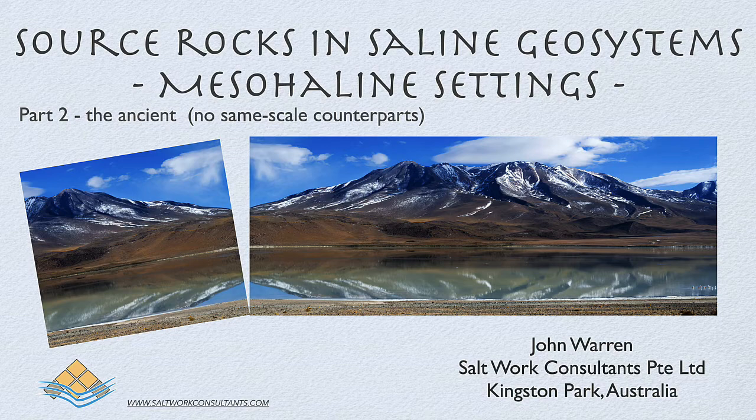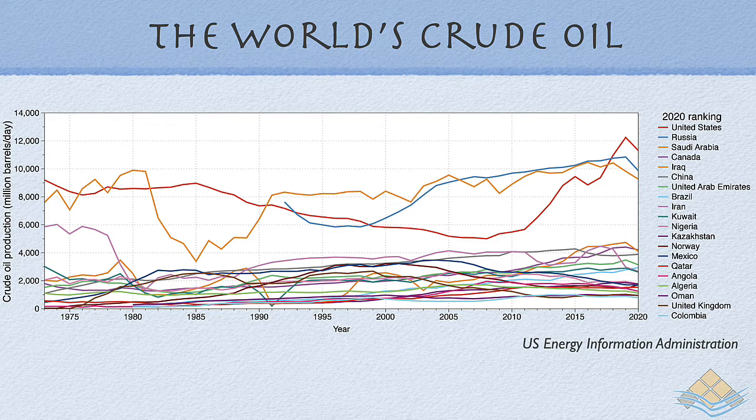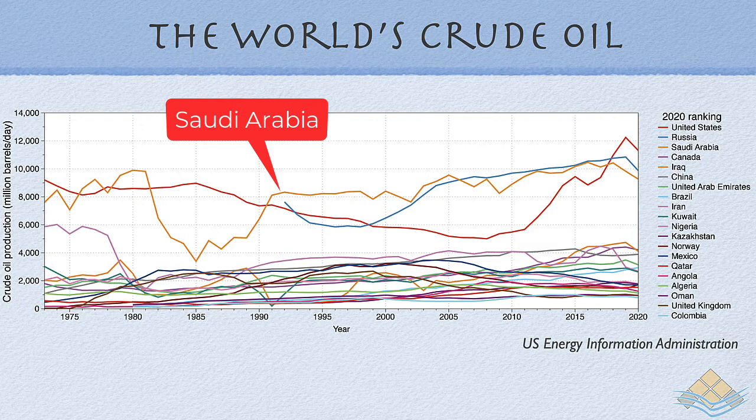Before we start, let's have a look at the world's oil distribution and production — in other words, where does it all come from? This plot from the US Energy Information Administration plots production over the past few decades, showing how Saudi Arabia has maintained its position throughout much of the 30-year history as the dominant producer of hydrocarbons, and much of the oil coming out of that system comes from mesohaline source rocks for which there is no same-scale equivalent.